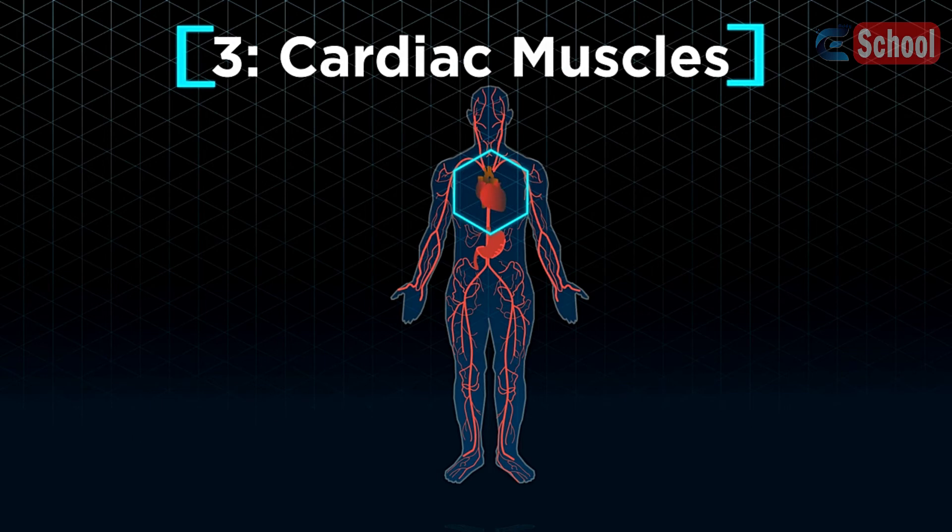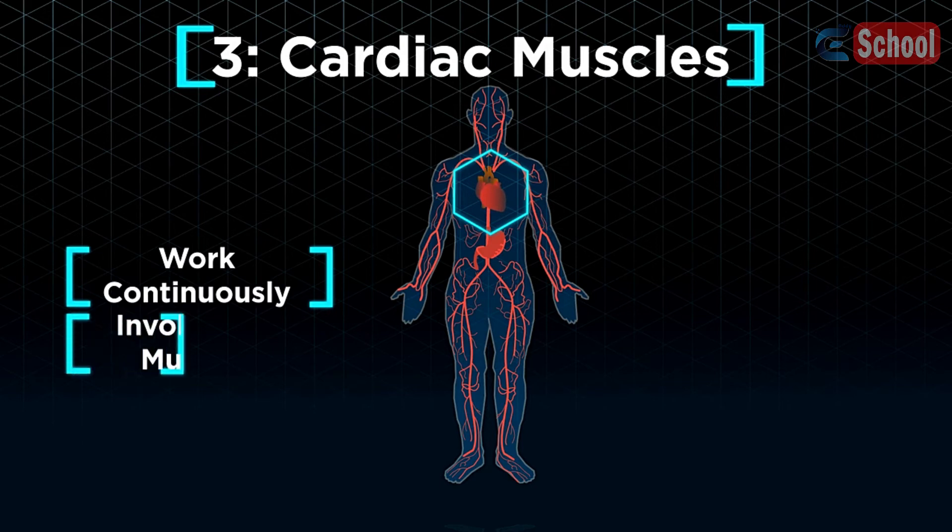Cardiac muscles, that make up our heart, are able to work continuously without tiring. Like smooth muscles, cardiac muscles are also involuntary. We cannot make our heart work faster or slower.